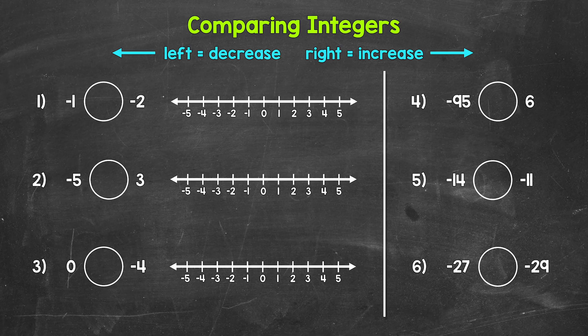When comparing integers, it can be helpful to visualize the integers on a number line. Just remember, the further right on a number line, the greater the value — numbers increase in value as we go right. On the other hand, the further left, the smaller the value — numbers decrease in value as we go left on a number line.